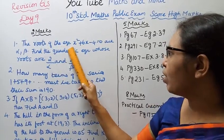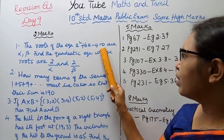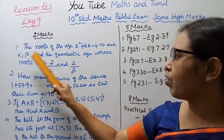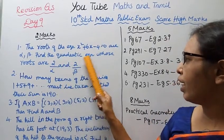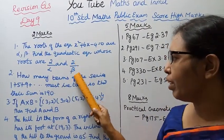The roots of the equation x squared plus 6x minus 4 equal to 0 are alpha and beta. Find the quadratic equation whose roots are 2 by alpha and 2 by beta.